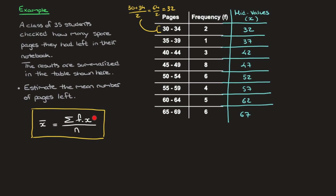If you find this notation a bit confusing, here's what it means. On the numerator we need to multiply each of the frequencies with its corresponding x-value — so 2 times 32, 1 times 37, and so on — and add all of those results together. In other words, we multiply each frequency by its corresponding mid-value and add them all together. The denominator n tells us to divide by the total number of values, so in this case the total number of students.